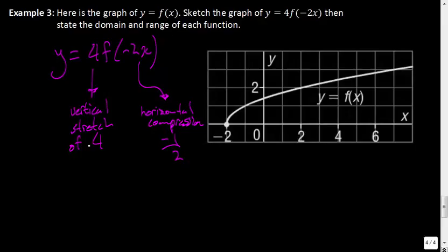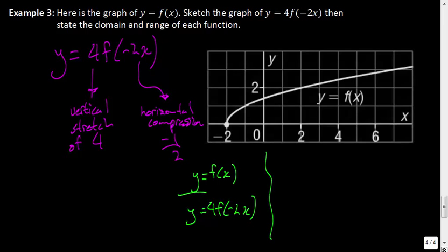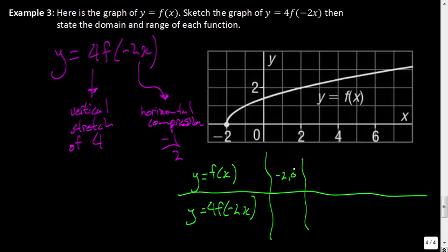We take the reciprocal of negative 2, which gives us negative ½. Let's look at our ordered pairs. Our function is y = f(x), and our new function is y = 4f(−2x). The first ordered pair I want to deal with is (−2, 0). We take the x-coordinate and multiply by negative ½, giving us 1. The y-coordinate is multiplied by 4, but 0 × 4 = 0. So the new ordered pair is (1, 0).